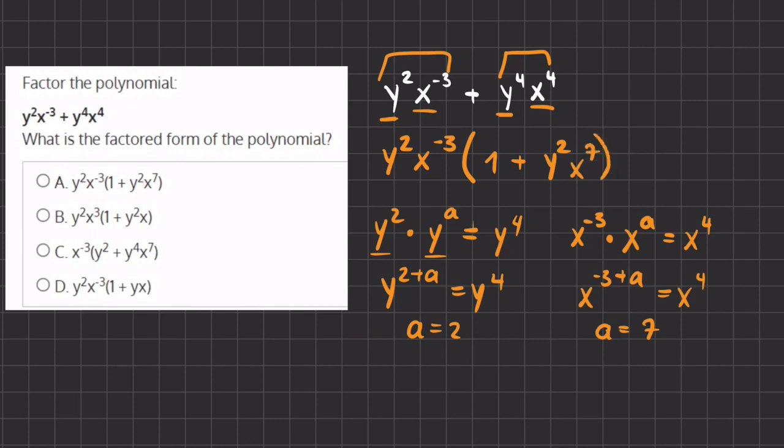Now if you want to make sure that you factored it out correctly, you can always take this greatest common factor term that you have here and distribute it into your parentheses, and you should be ending up with the original polynomial. So if we take a look here at our factored polynomial, this is our final answer, and it matches exactly with answer a, therefore a will be our final answer.